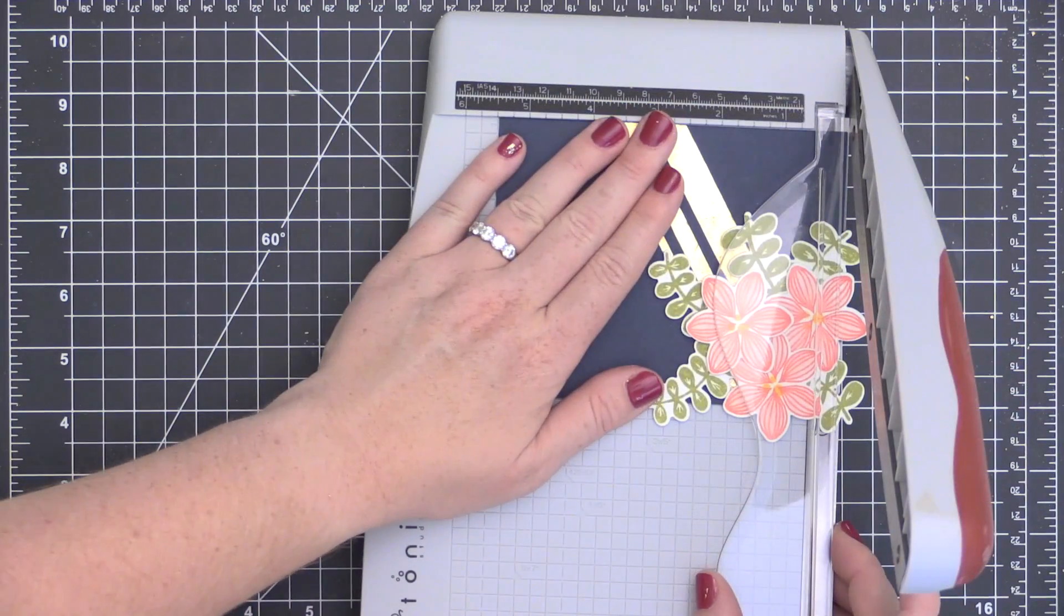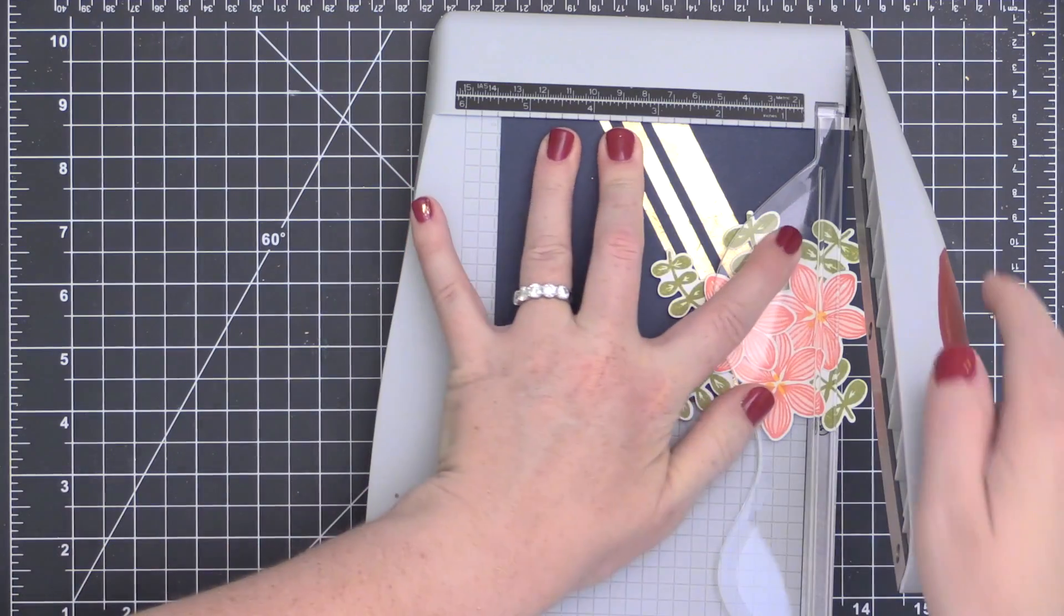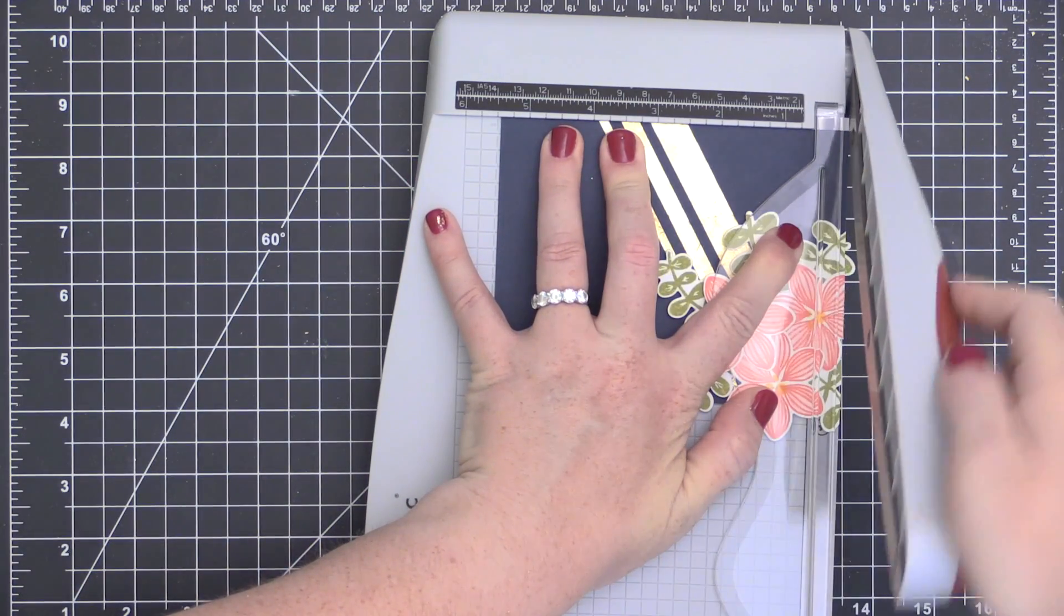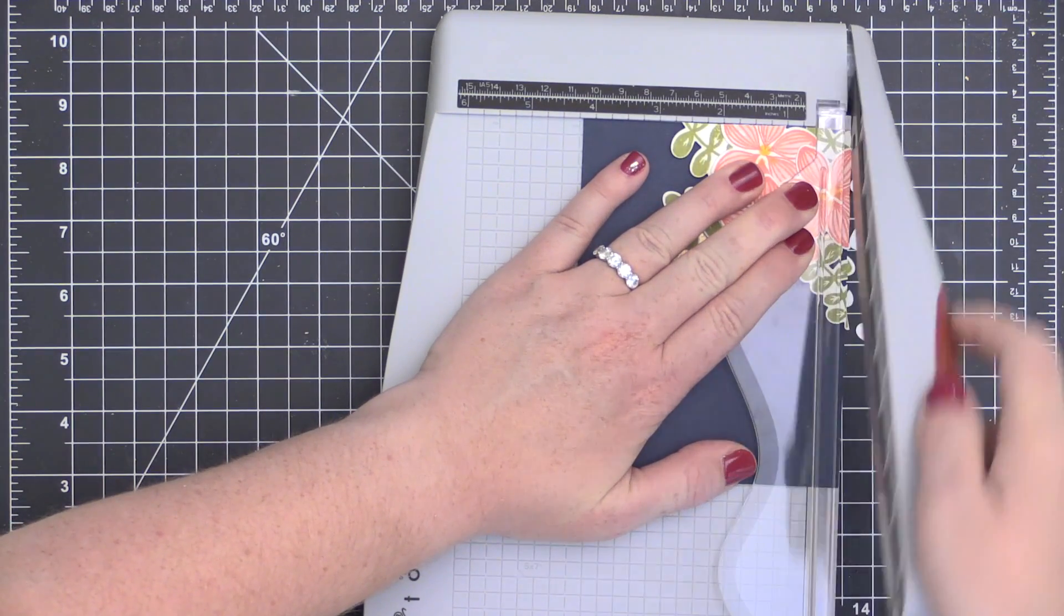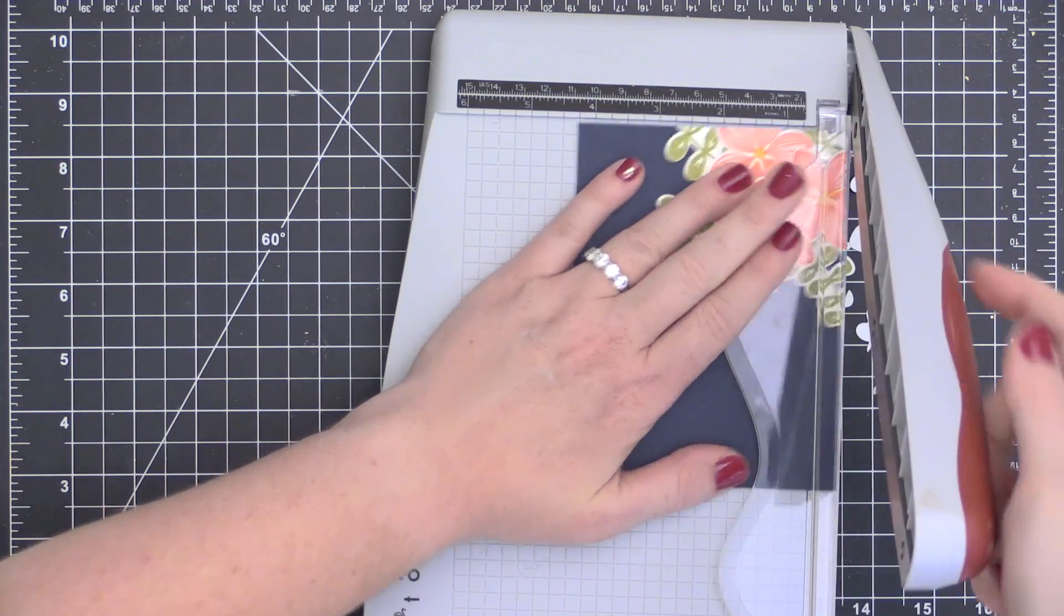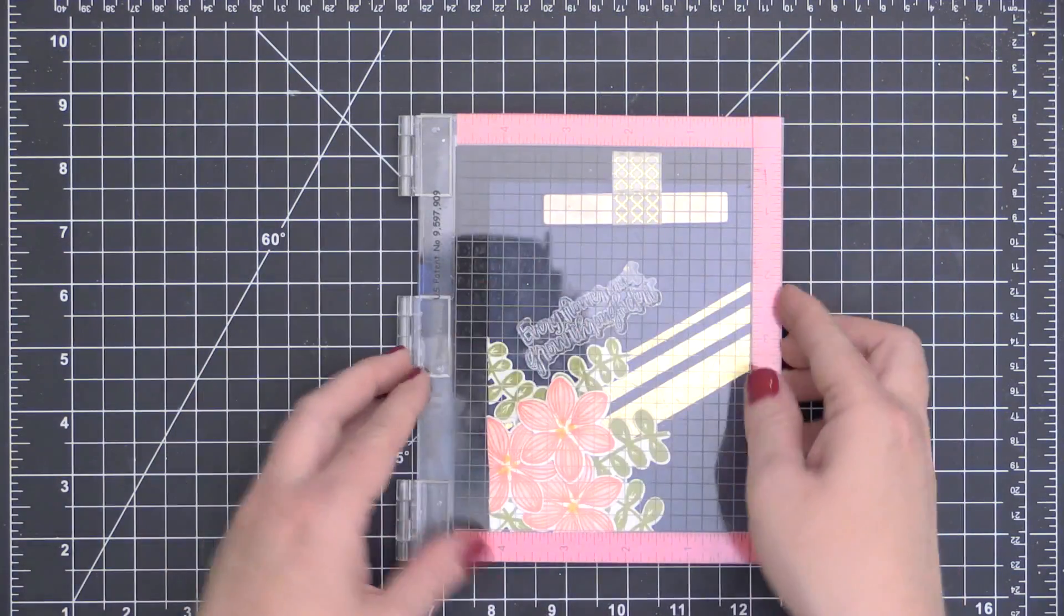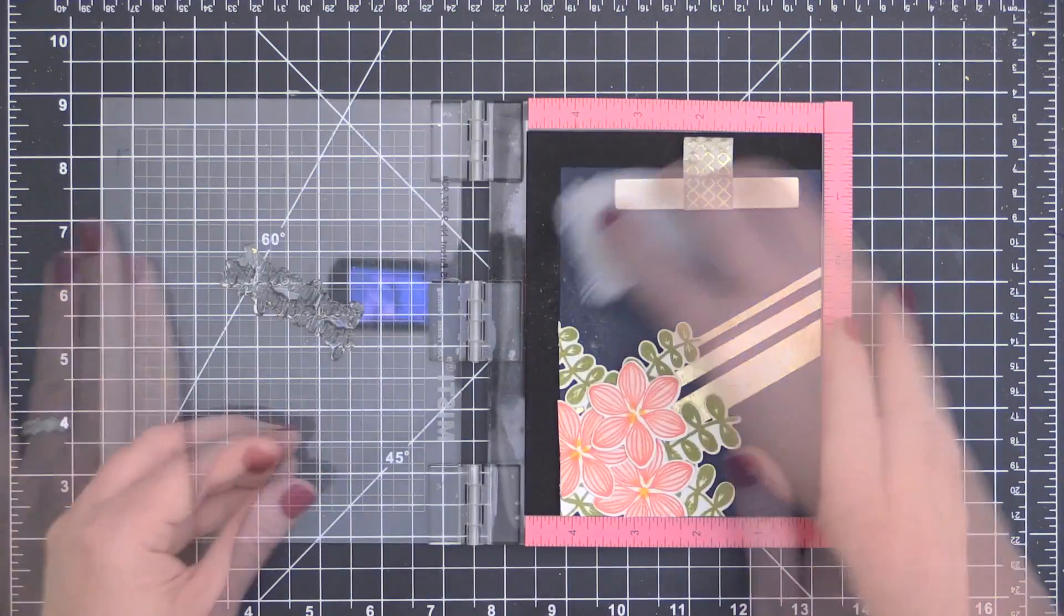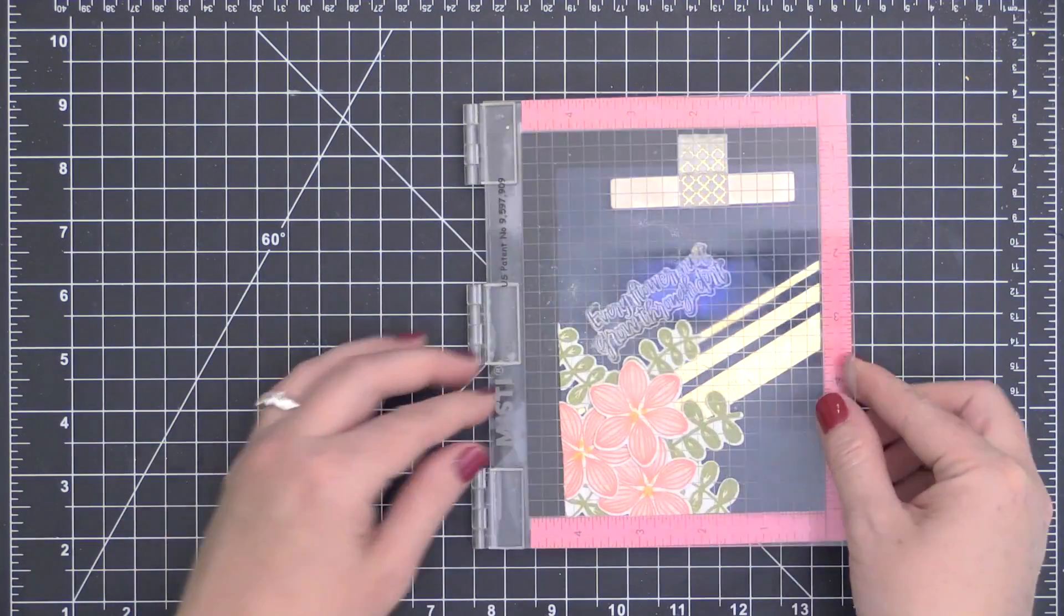I almost died when I did this. I brought in my Tonic trimmer to trim off the excess, and I thought, oh my gosh, it's not going to work. This thing cuts like a dream. It cut right through all of those images and left me with this really cool edge on this card where these die cuts are just kind of really cleanly cut off there. It's almost like when you stamp off the front of your card, only these are die cuts. I thought that was a really cool effect.